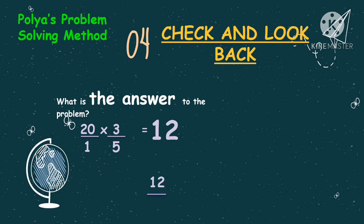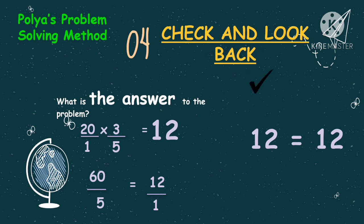We will check if that is correct. 20 times 3 is 60, and 1 times 5 is 5. Get the GCF of 60 and 5, which is 5. So 60 divided by 5 is 12, and 5 divided by 5 is 1. Then 12 divided by 1 is 12. Check — 12 is equal to 12. Check.